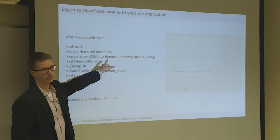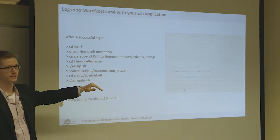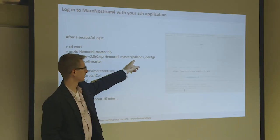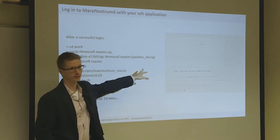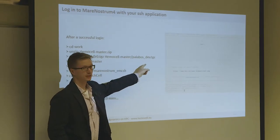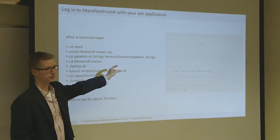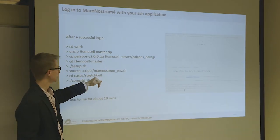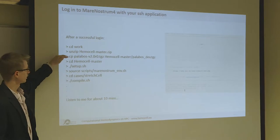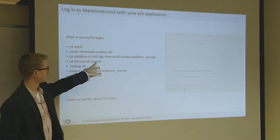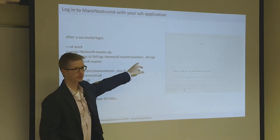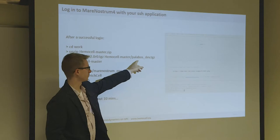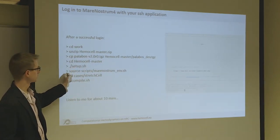The next step is to take the Palabos source code and copy it into that HemoCell folder under the name 'palabos_dev.tar.gz'. This is because HemoCell contains a convenience function that will look for this file and then uncompress Palabos, patch Palabos, and do some background setup for you so that you don't have to. When done, change into the hemocell-master folder and run the setup script. This script will uncompress the Palabos source code, patch it, and that's it.